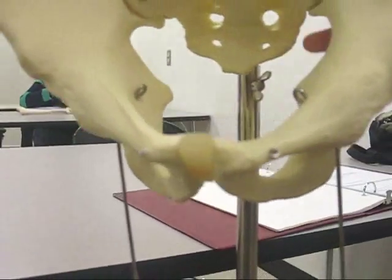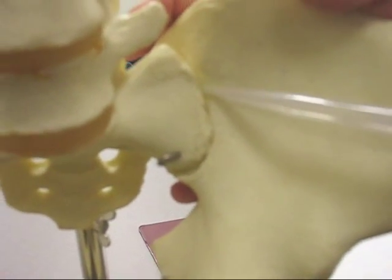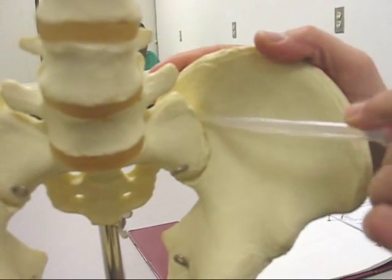And the auricular surface, the articulation for the sacrum, is the surface where the sacrum connects to the pelvic bone back here.